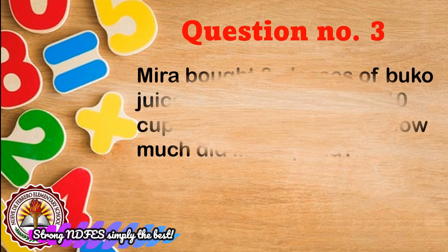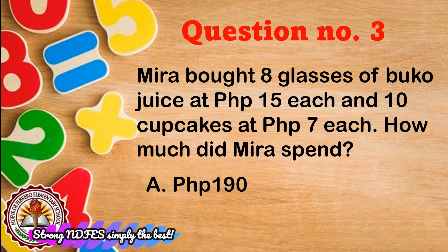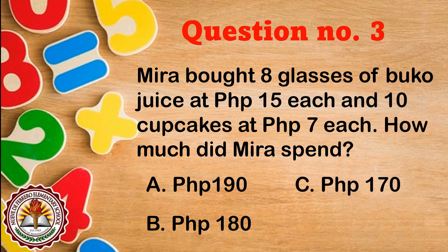Question number 3: Mira bought 8 glasses of buko juice at 15 pesos each and 10 cupcakes at 7 pesos each. How much did Mira spend? Is it A) 190 pesos, B) 180 pesos, C) 170 pesos, or D) 160 pesos? The correct answer is letter A, 190 pesos.